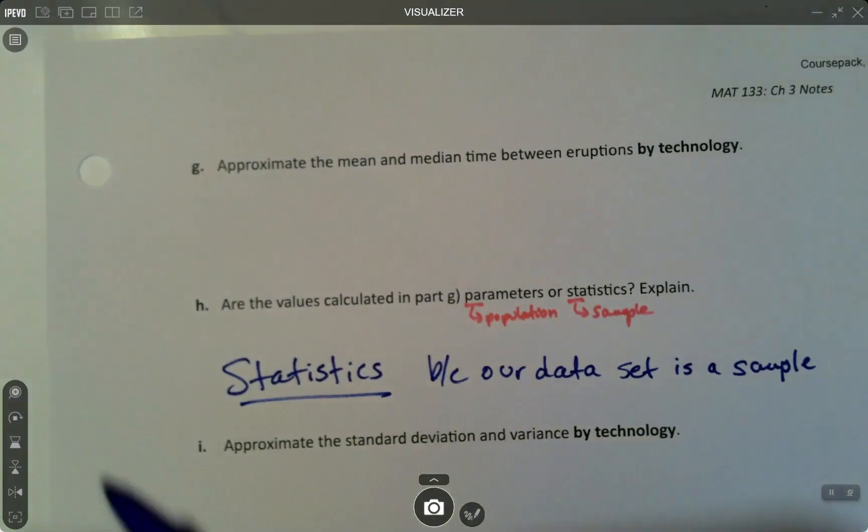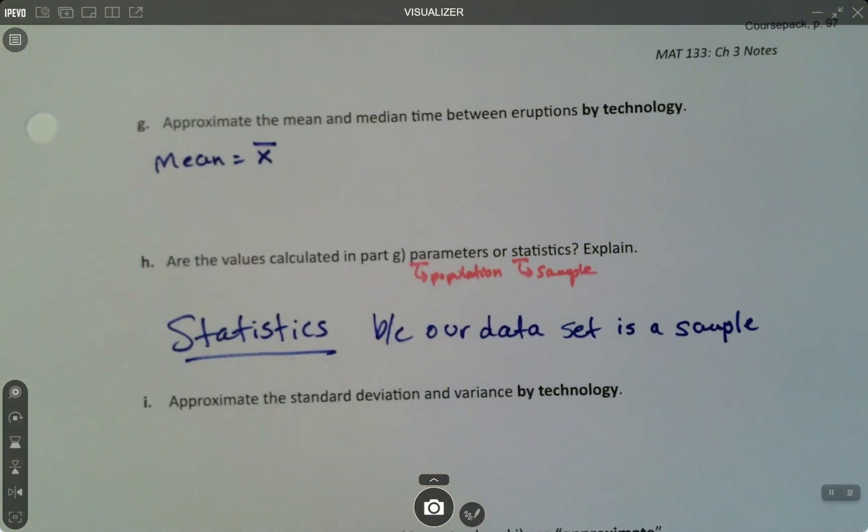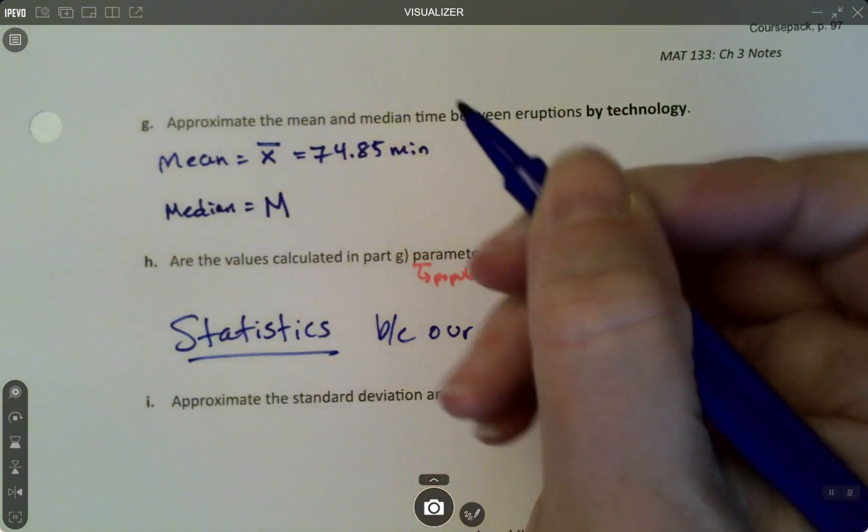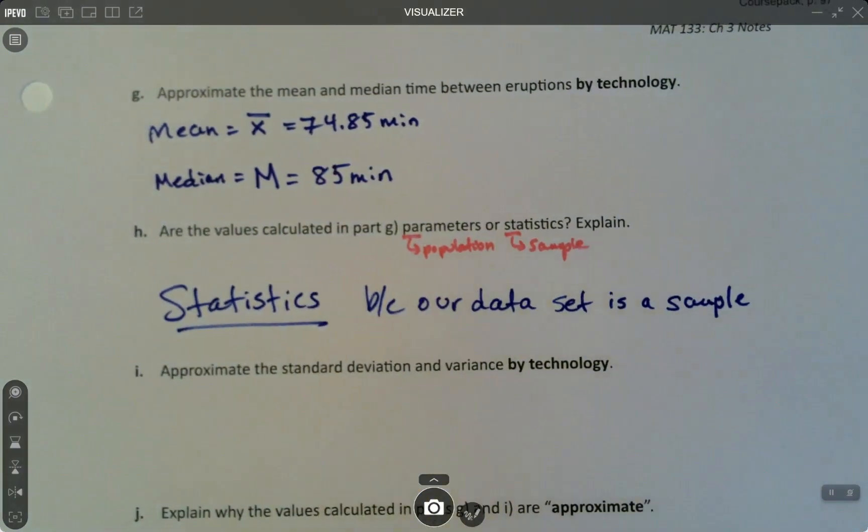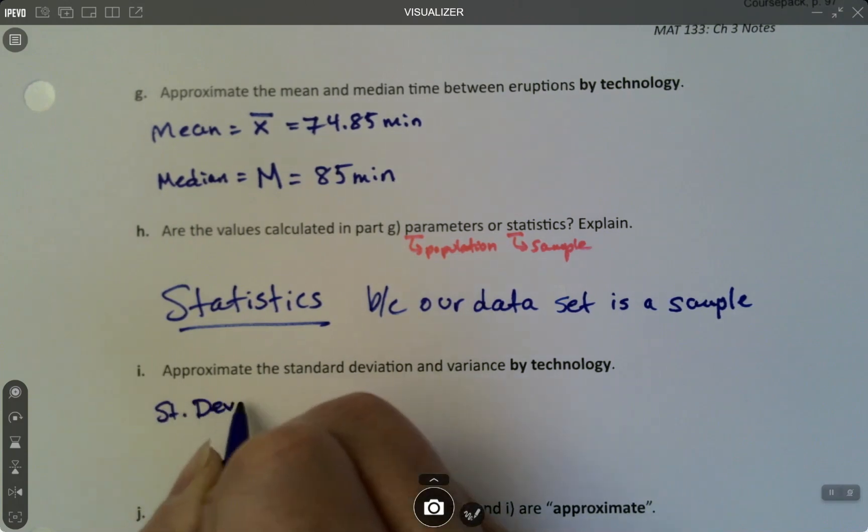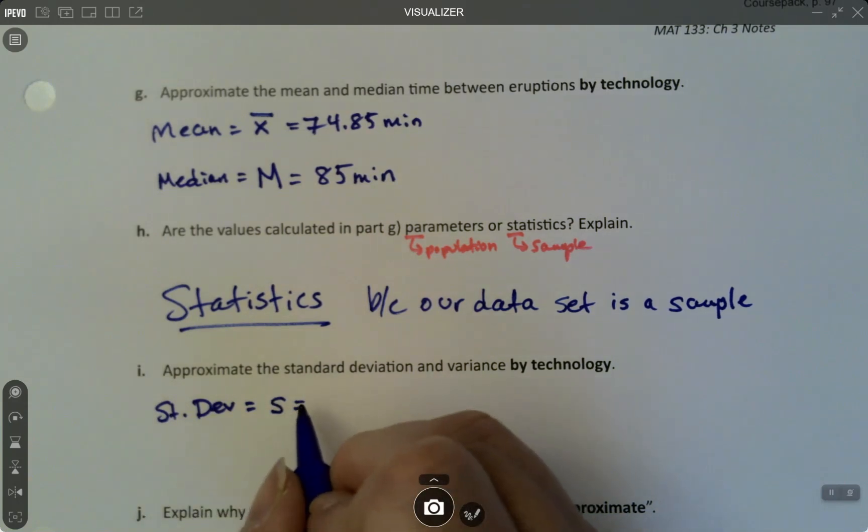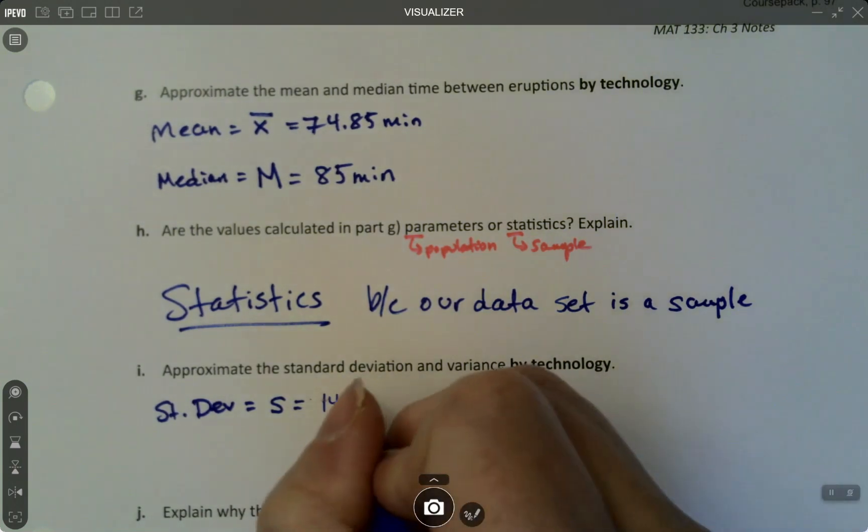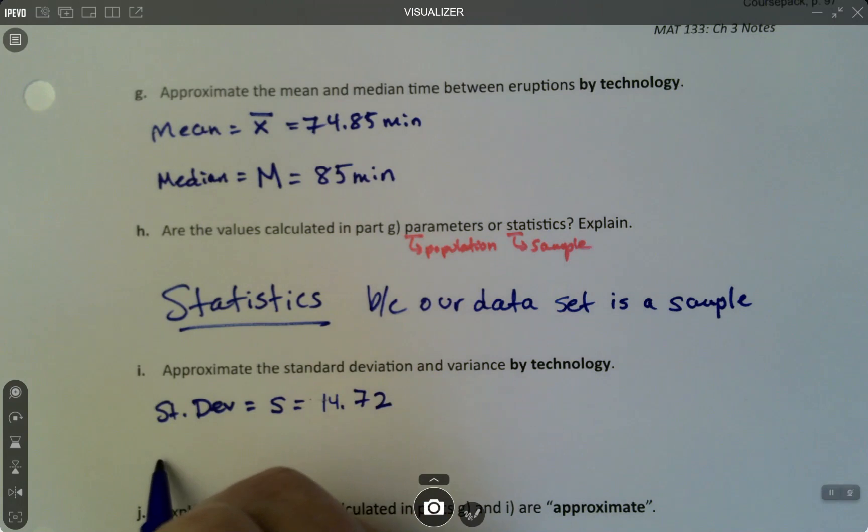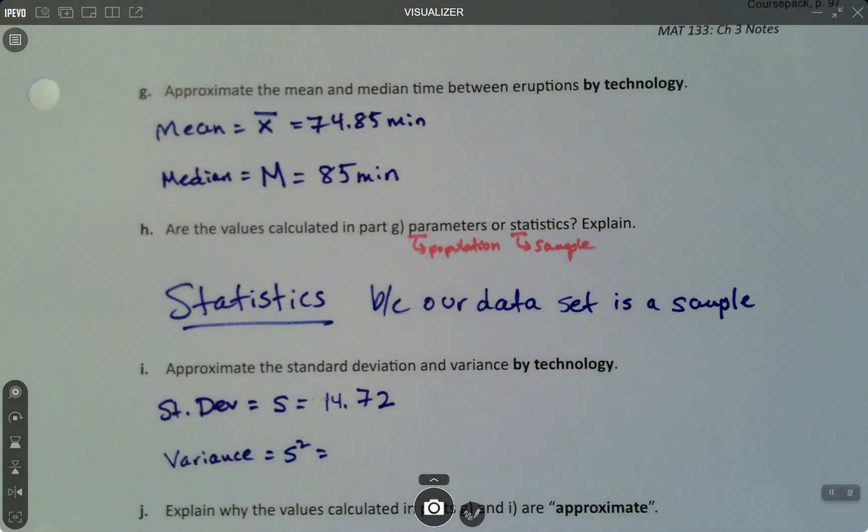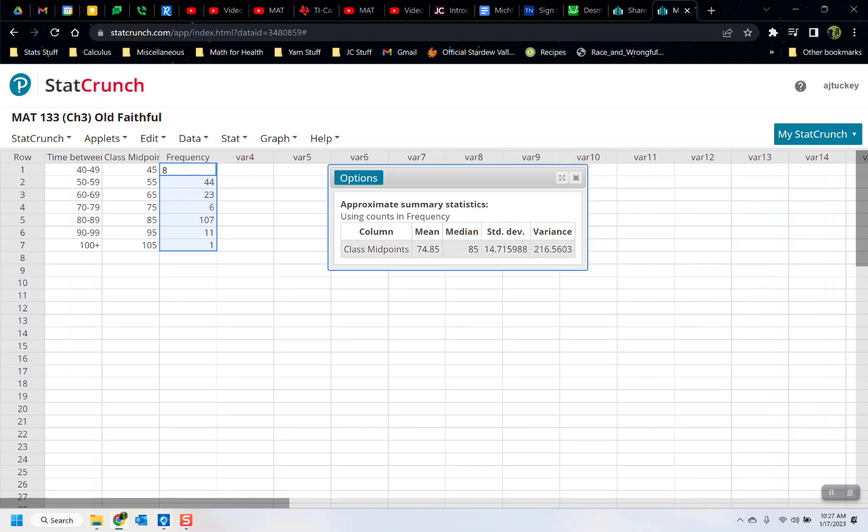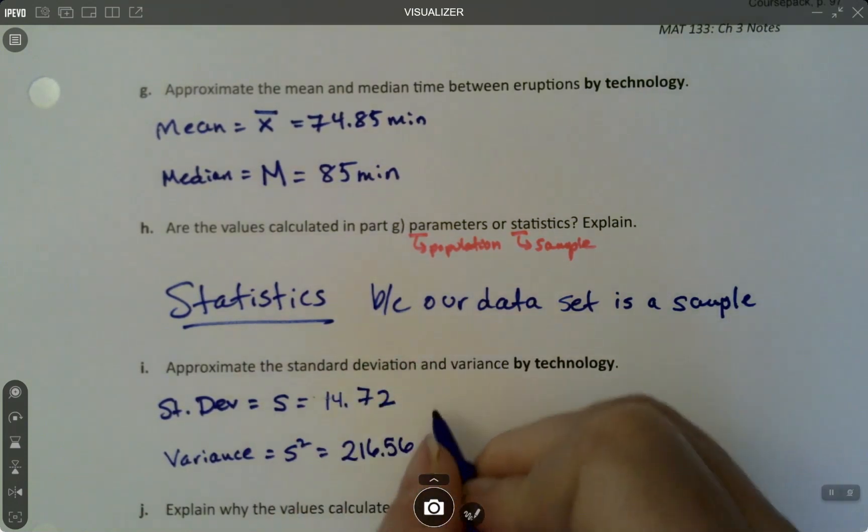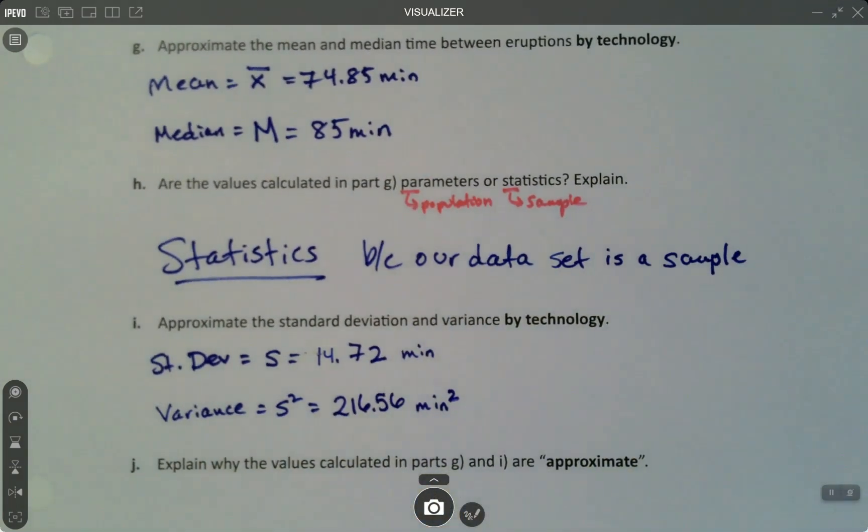Okay. So let's go back and write down those values. So the mean, remember the symbol for that is X bar because this was a sample, is 74.85 minutes. The median, which the symbol for that is actually a capital M in case you're interested, it's not used very often, is 85 minutes. The standard deviation is a sample standard deviation. That's why I picked a regular standard deviation. That's S. So that's 14.7. It didn't ask for any particular number of decimal places, so I'll do two. And the variance was S squared, which was—and I can't remember that one, so let me go back—216.56, right? All right, this would be minutes. This would be minutes squared because variance always has that weird unit.